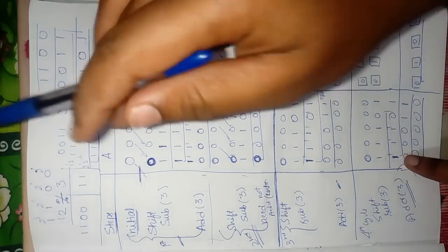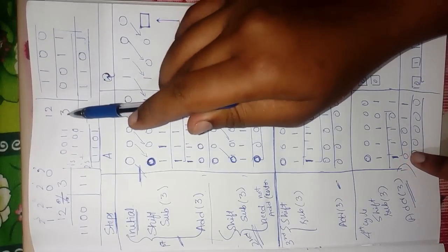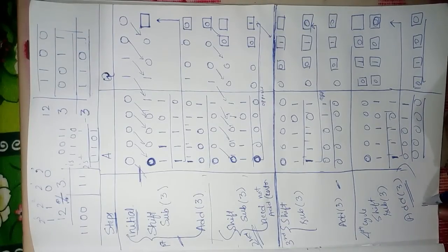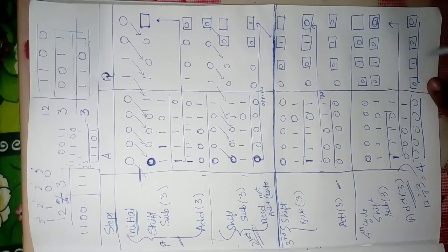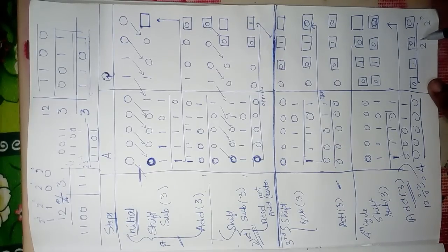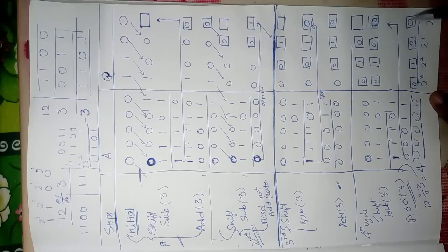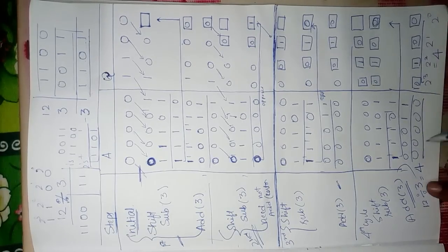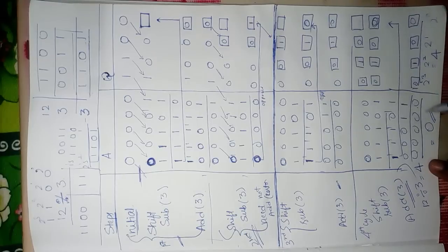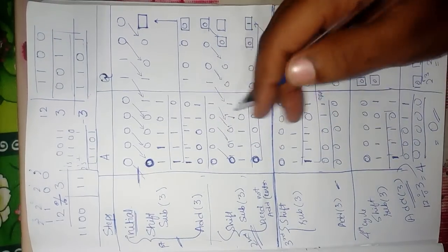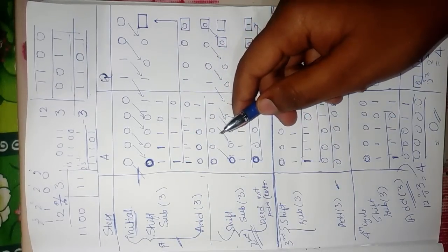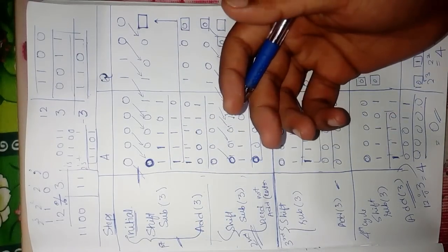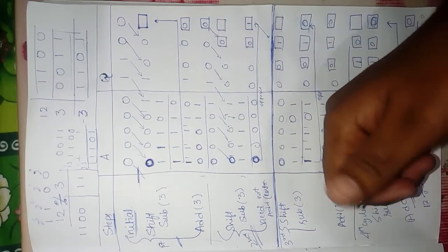To verify: 12 divided by 3 is 4. Looking at the quotient 0 1 0 0, we have 2 power 2 = 4 and everything else is 0, so the quotient is 4 and the remainder is 0. This is how we do division using the restoring method. Hope you like this video — please subscribe, share, and comment. Thank you guys.